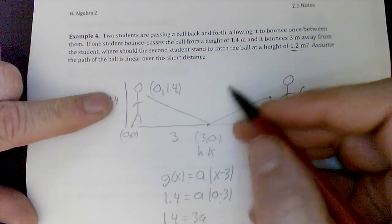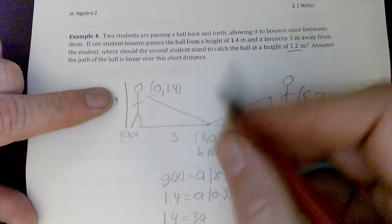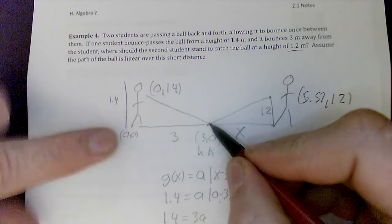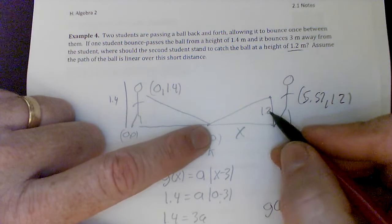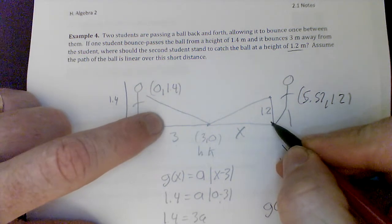This guy drew it, bounced it from a height of 1.4 meters. So it started at 1.4 meters. It bounced three meters away, which gives me this point right here. And it wants to know where the student would stand if he wanted to catch it at 1.2. So obviously, closer to 1.4, either here or here, two possible answers.